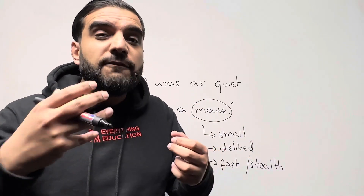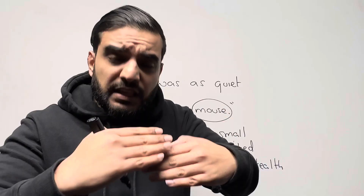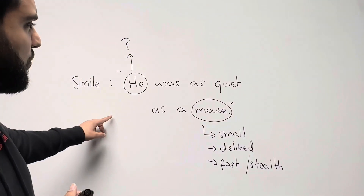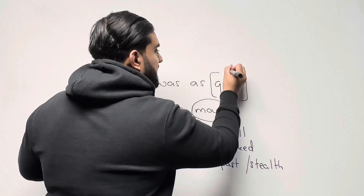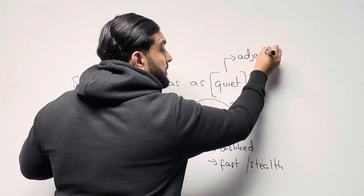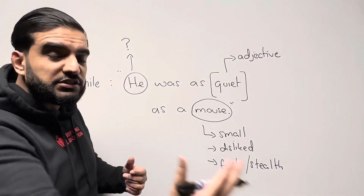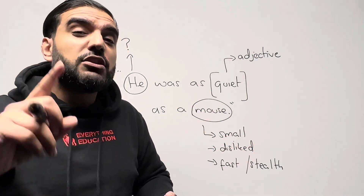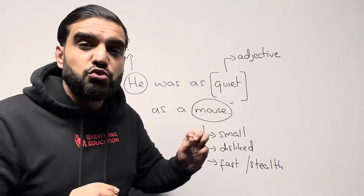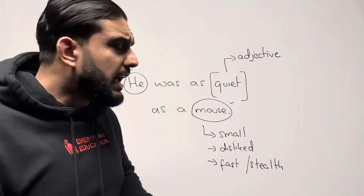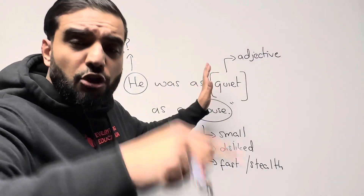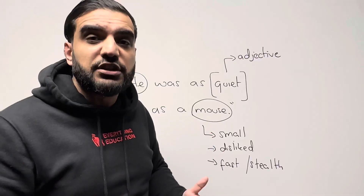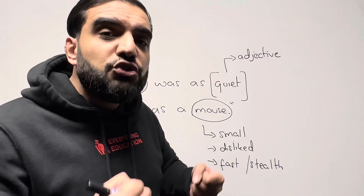Now in between the two nouns there will always be either a verb or an adjective that gives you the quality of the comparison. What are we actually comparing? In this one we have our adjective here — we're looking at how quiet this person is. That's what we're comparing. We're not comparing how fast they run. The writer is comparing the quality of how this person is super quiet. So we now have our two nouns and the quality in between. It's going to always be either a verb or an adjective. In this instance it's an adjective. That is how you begin to look for your effect.